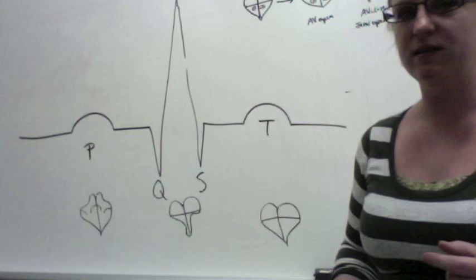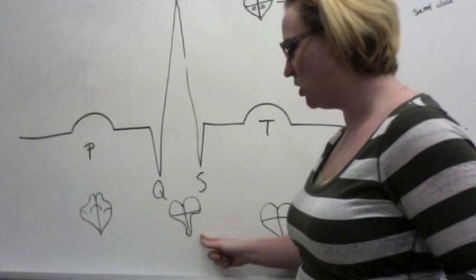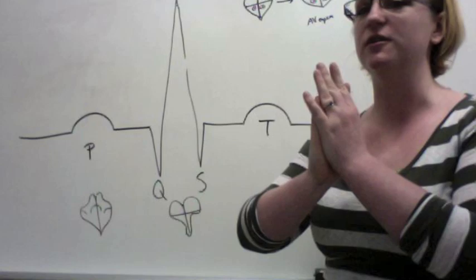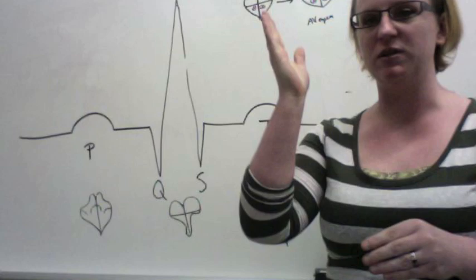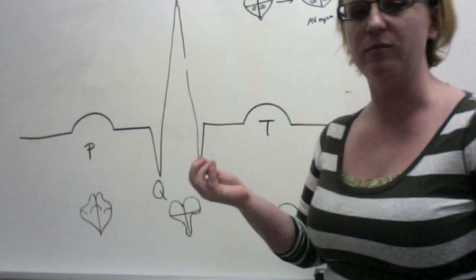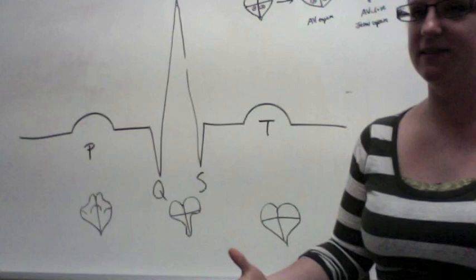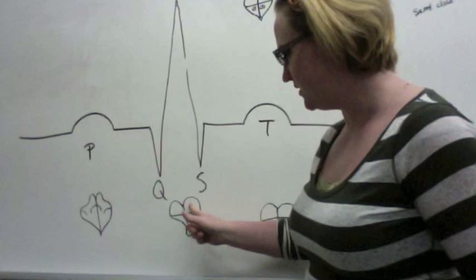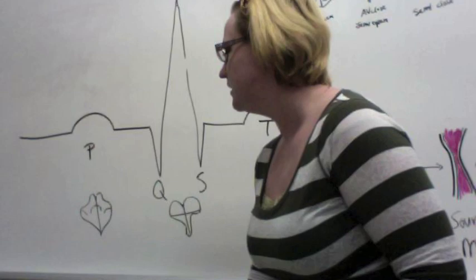Next we have the QRS complex — you can notice it's a much bigger spike of activity. There are actually two rounds of activity occurring inside this complex. First, we have depolarization of the ventricles. Ventricles are beefier muscles because they're sending blood out much farther — they have to overcome a lot of arterial pressure going out to the body or into the lungs. The other thing happening is that the atria repolarize. So, repolarization of the atria and depolarization of the ventricles make up the QRS complex.